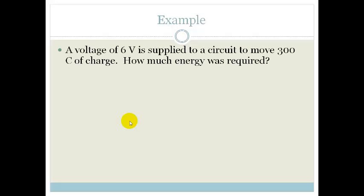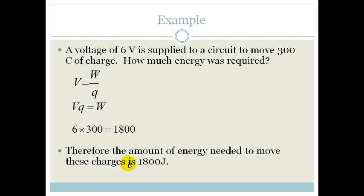So let's look at an example. A voltage of 6 volts is applied to a circuit to move 300 coulombs of charge. How much energy was required? So we've got V equals W over Q. We rearrange it. We get VQ equals W. So we've got the voltage of 6. We've got the charge in coulombs, it's 300. So our answer is 1800. Therefore, the amount of energy needed to move these charges is 1800 joules.